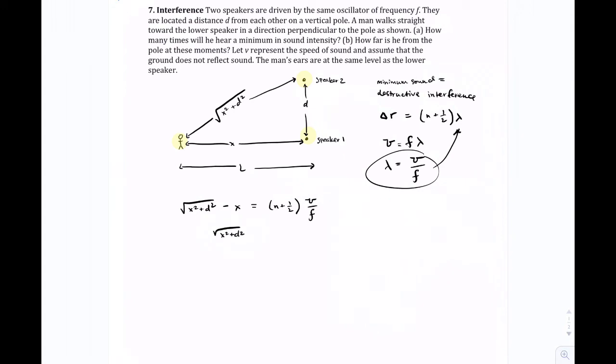X squared plus D squared equals N plus one-half times V over frequency plus X. Well, okay, now we square both sides. And this becomes just X squared plus D squared. And this gets kind of complicated, but it's not too crazy. So you just square this.